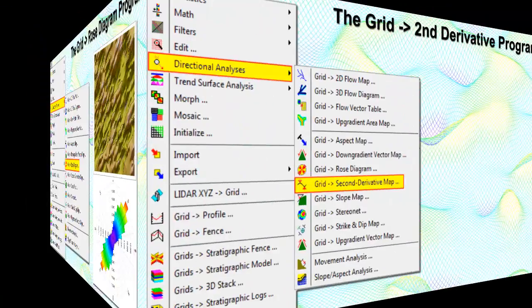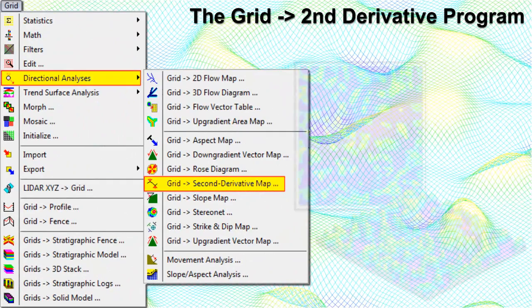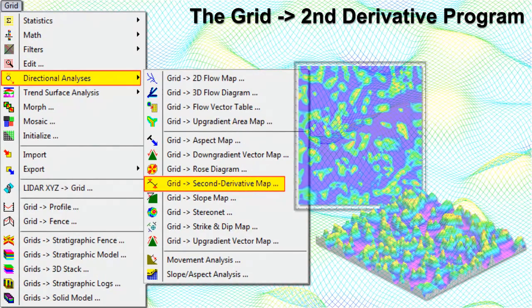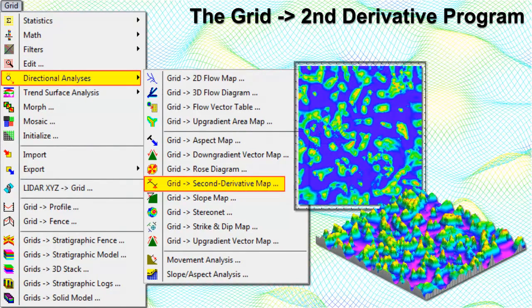The Grid to Second Derivative Map program computes the changes in Z values within a grid model to determine the slope at each grid node, then computes the change of these slope values and plots the result as a contour map. These second derivative maps highlight areas where the slope is changing, such as where a steep wall meets a valley floor. These inflection points also highlight the crests of anticlines and the troughs of synclines.